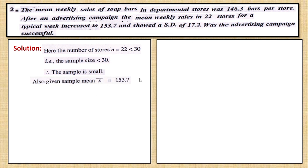The mean is x-bar, where x-bar is the sample mean. So the sample mean x-bar is 153.7. The population mean mu is 146.3.